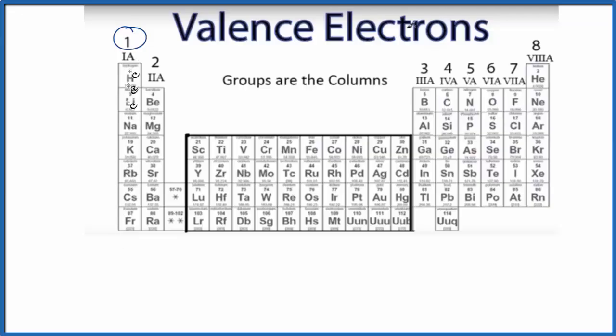So all of these elements here will have one valence electron. Let's write the Lewis structure for hydrogen. We write hydrogen and we put one valence electron there. That's the Lewis structure for hydrogen, and all of these will look the same way. Potassium has one valence electron.